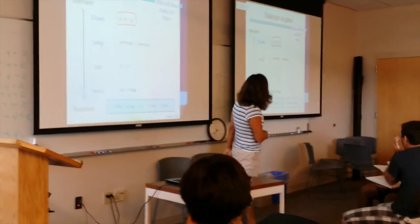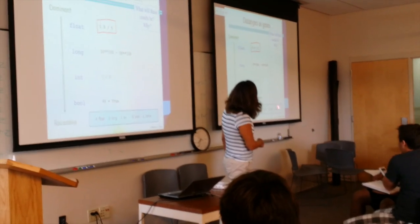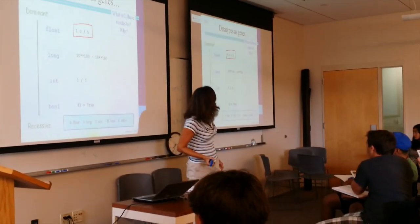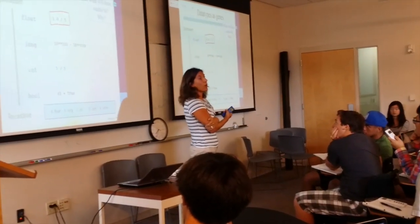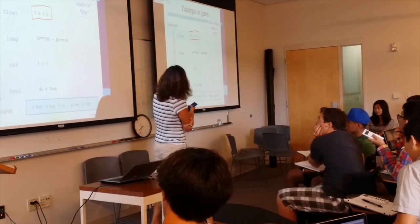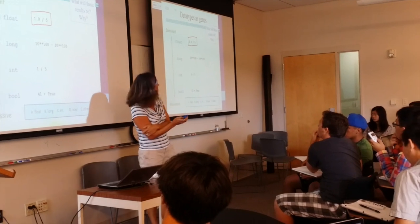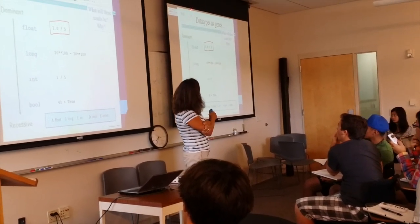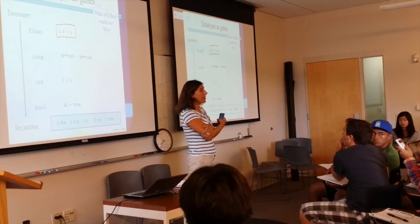What kind of thing is that going to produce — a float, a long, a bool, or something else? Go ahead and vote. If you don't know, just vote anything. Get in the habit of always voting, because sometimes you get credit just for voting whether you're right or wrong. Make sure you see that little check mark.